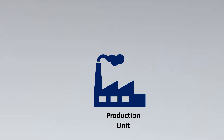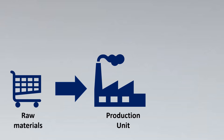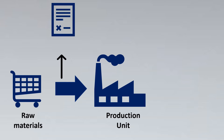In the production unit, certain raw materials are required. When we get the raw materials, we come across the first term — CMTR, which stands for Certified Material Test Report, or in short form, Material Test Report. Basically, when the raw material arrives, we test whether the raw material certificate confirms it is the same alloy we require for production.